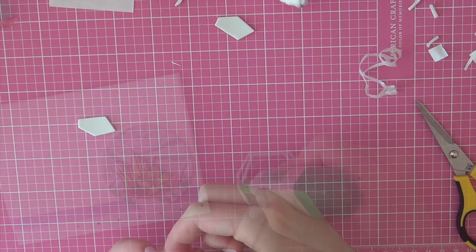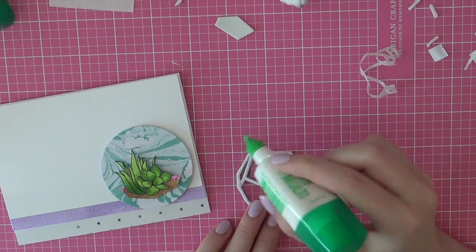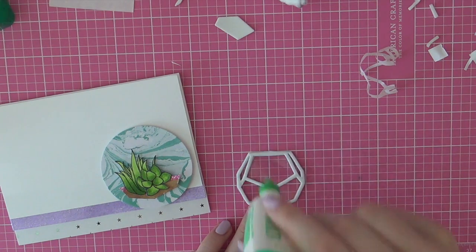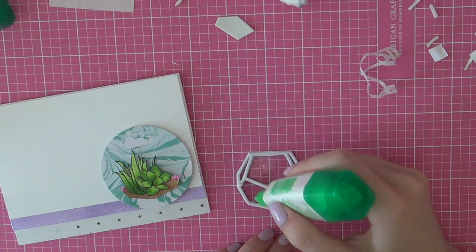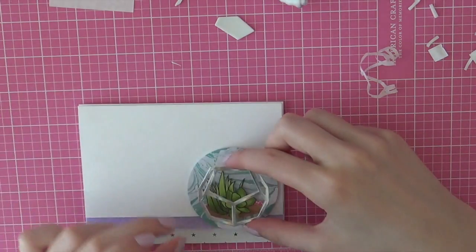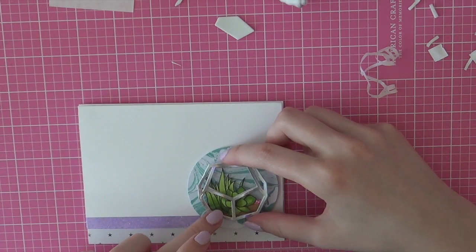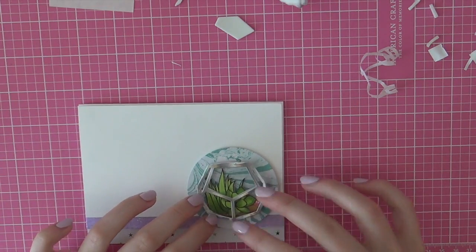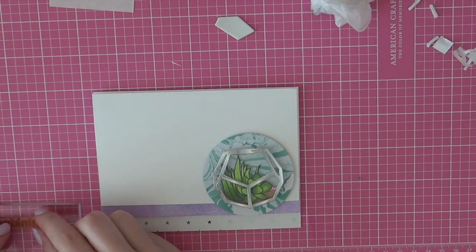So I am adhering that foiled terrarium and then I am going to add some Tombow Mono Adhesive on the fun foam. So I can adhere the terrarium onto that marbled circle. I am going to line that up with the soil and then I will have a really nice and foiled terrarium. So it looks really cute.